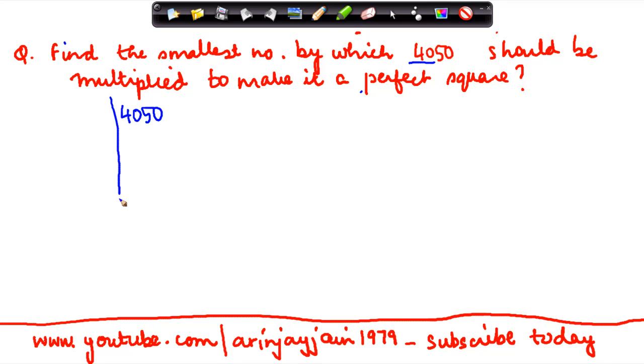Meaning that 4050 does not have a square root. In order to find out the number by which you have to multiply it, you first find out the prime factors of that number. So suppose I do this by 2 because there is 0, so this should be divisible by 2.